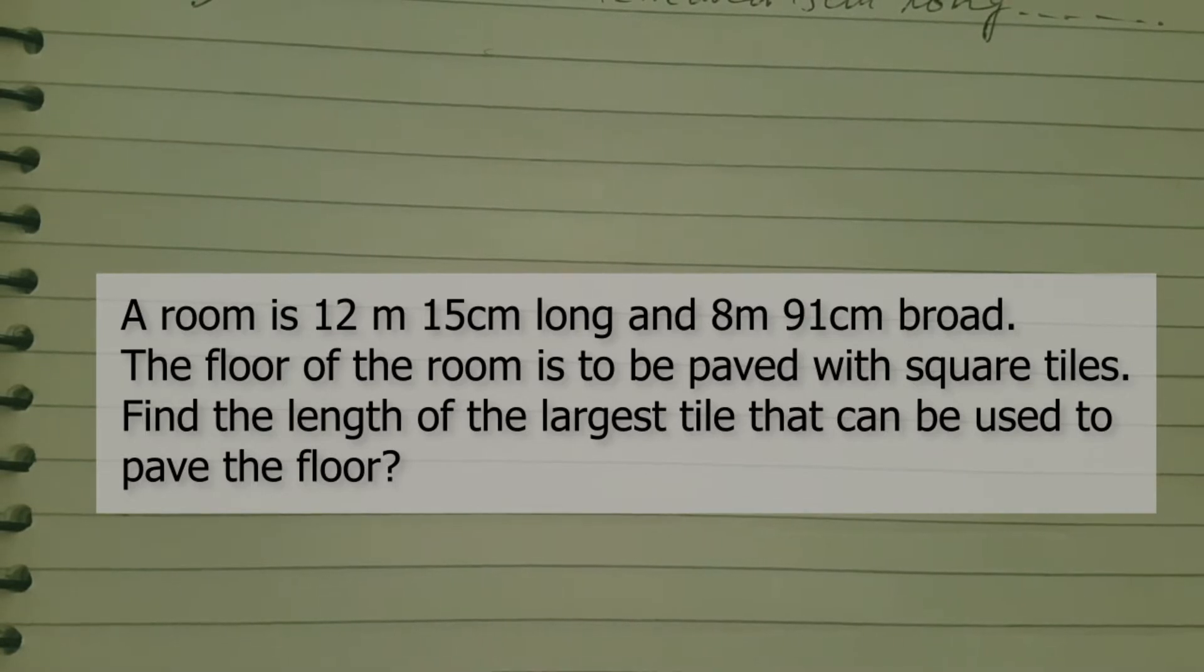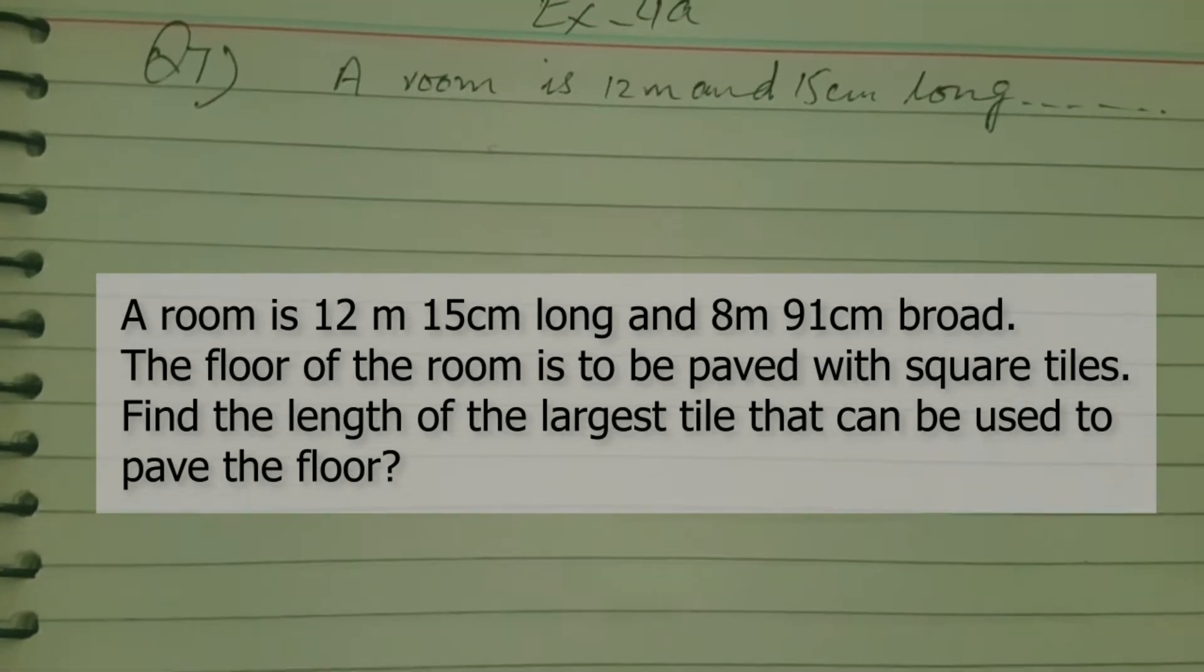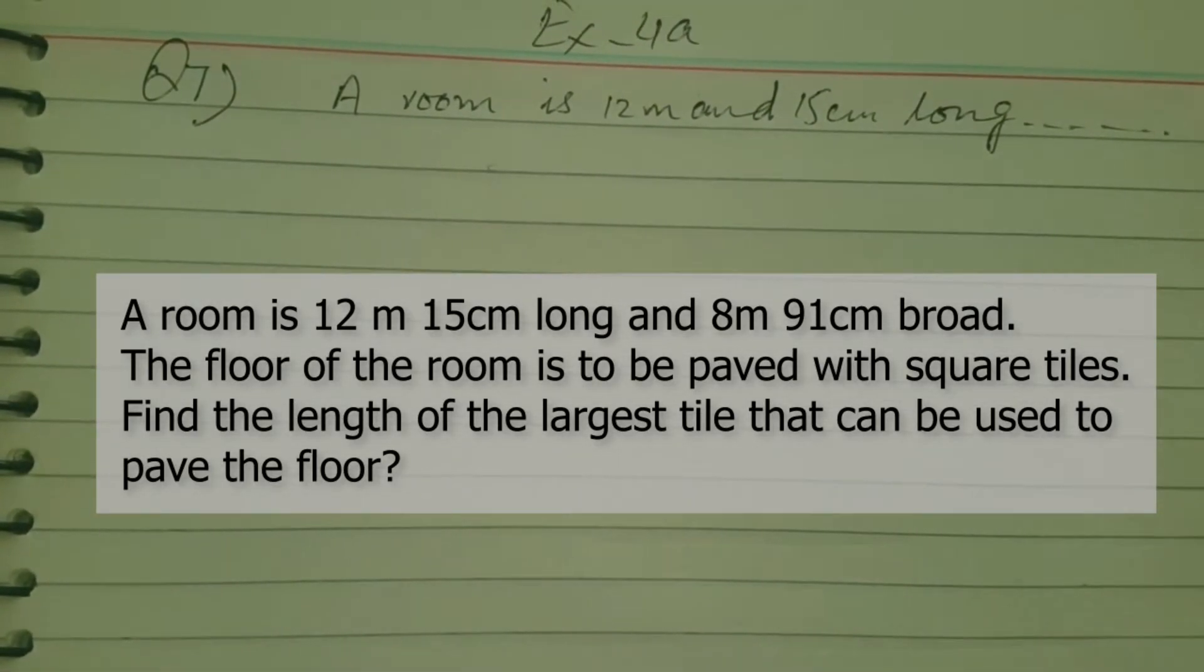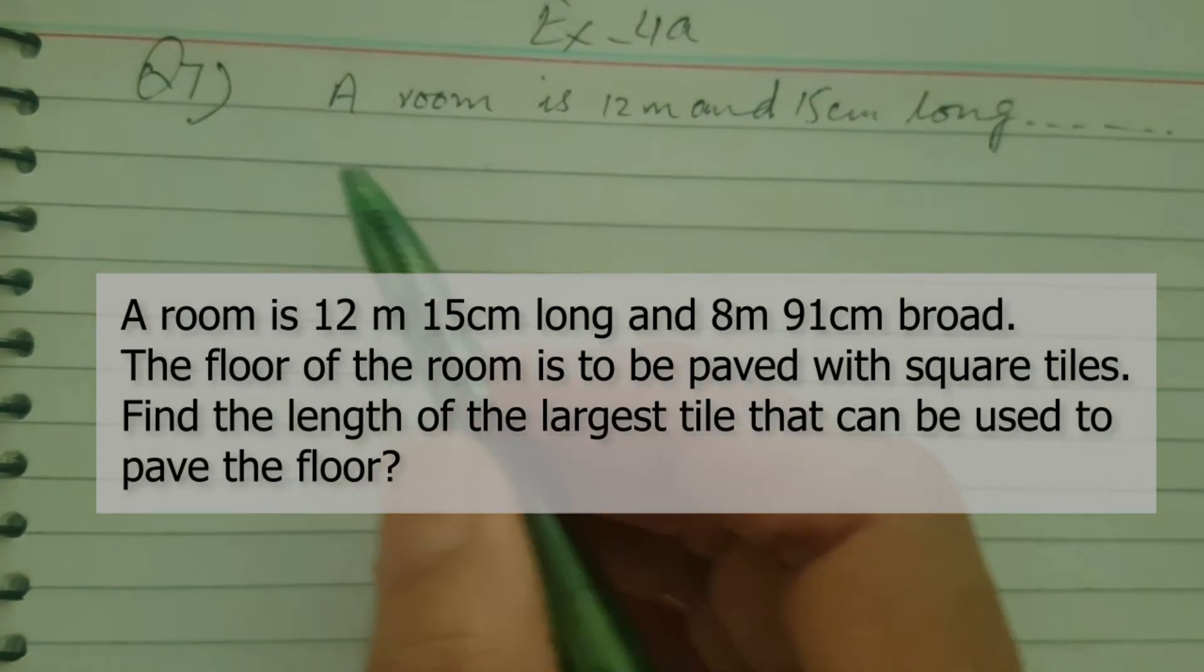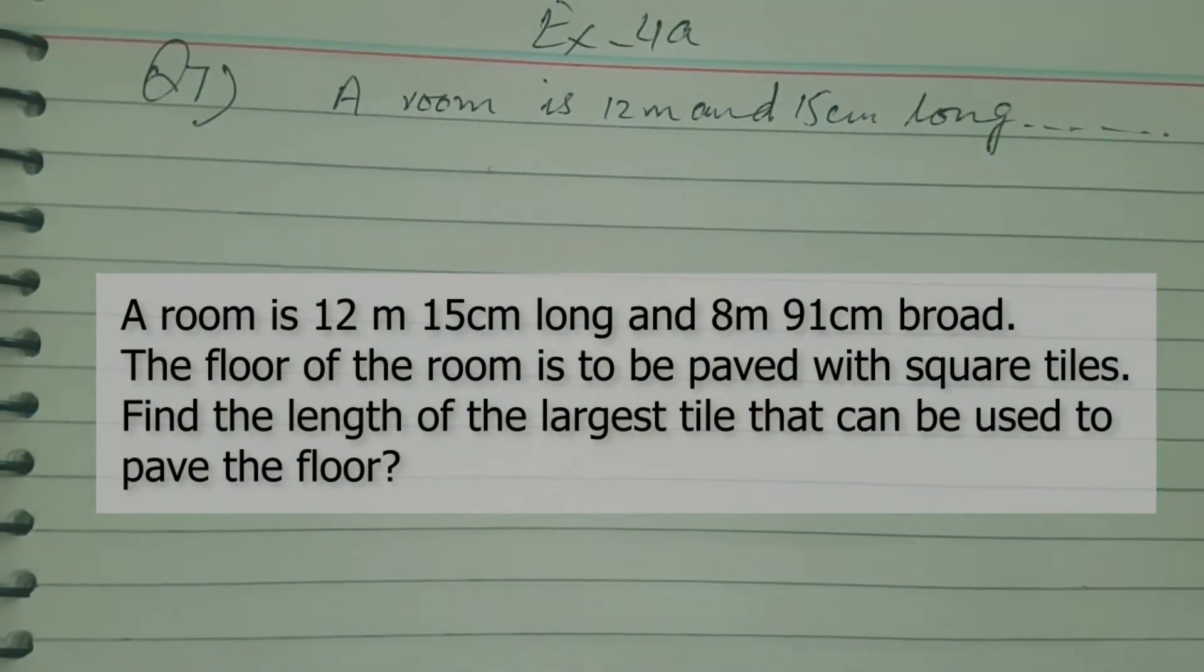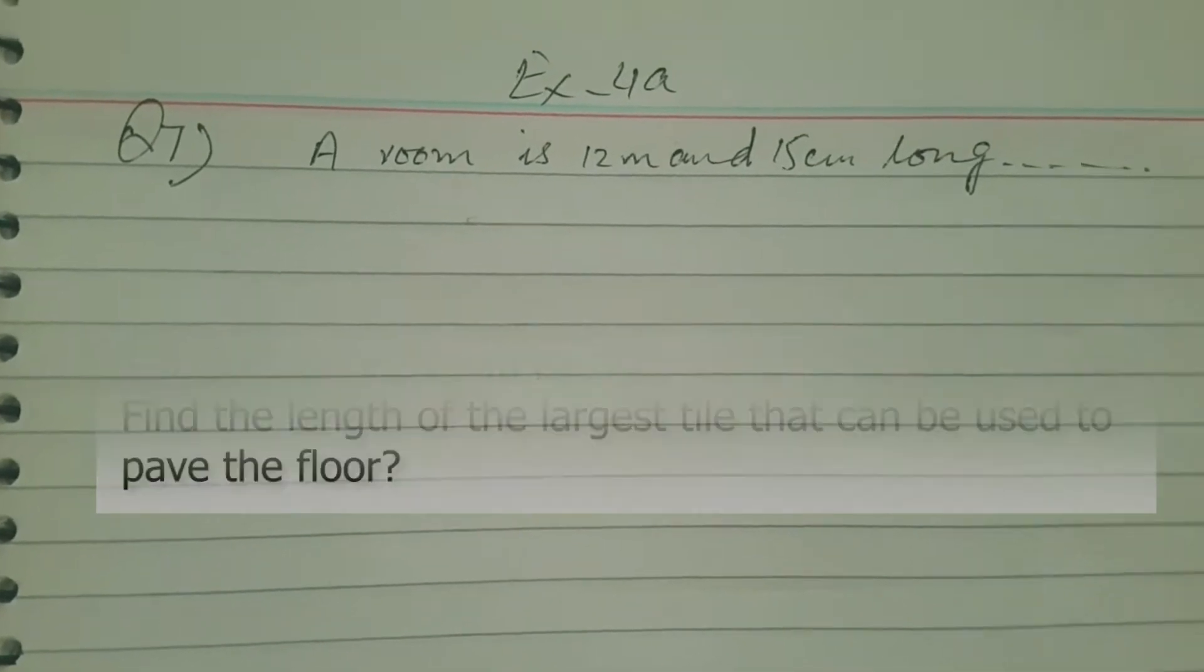They want to pave the room with tiles, and the tiles must be squared. So find the length of the largest tile that can be used. You have to find out the length of one tile which must be squared and which can be used in that room.